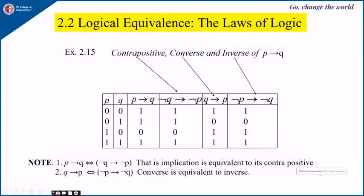Let us continue by writing P implies Q's contrapositive, converse, and inverse. Given P and Q, P implies Q will be false only when P is true and Q is false; in all other cases, P implies Q is true. The contrapositive of P implies Q is negation of Q implies negation of P, which is equivalent to P implies Q.